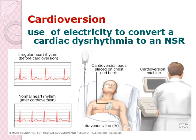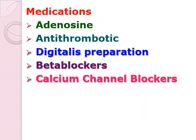We also have cardioversion, which is the use of electricity to convert a dysrhythmia to a normal sinus rhythm. Our goal is to convert your dysrhythmia to a normal sinus rhythm. There are several medications that can be used for your atrial flutter. One is adenosine, which is an anti-arrhythmic preparation. It causes a sympathetic block, meaning it slows the conduction between your SA node going towards your AV node.